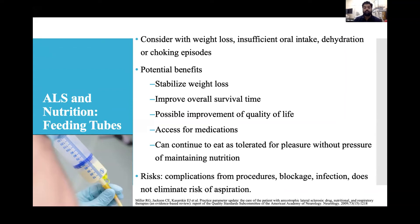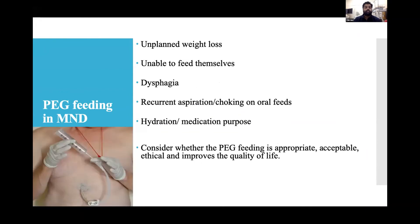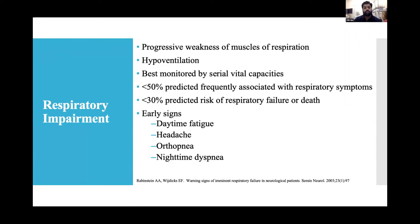Nasogastric tube feeding is considered for unexplained weight loss, inability to self-feed, dysphagia, recurrent aspiration, or for hydration and medication. However, consider whether it is appropriate, acceptable, ethical, and improves quality of life. Respiratory impairment results from progressive weakness of respiratory muscles; best monitored by serial vital capacity. Vital capacity less than 50% predicted is frequently associated with respiratory symptoms; less than 30% carries risk of respiratory failure or death. Earliest signs are daytime fatigue, headache from CO2 retention, orthopnea, and nighttime dyspnea.